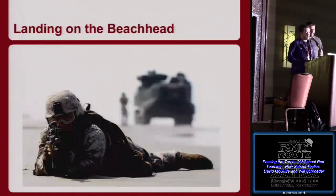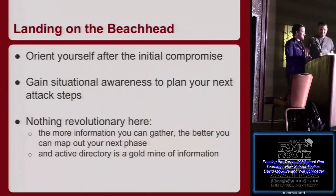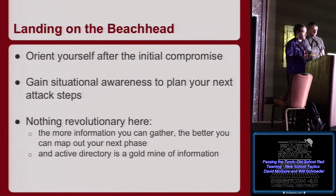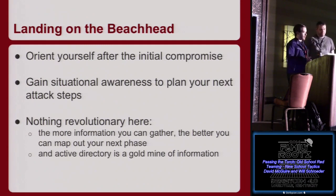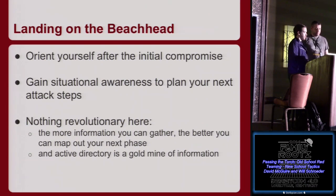The first tactic is situational awareness. After you land on your beachhead with one agent that's gone over the network boundary, you want to orient yourself and get as much information as possible to facilitate additional compromise and lateral movement. The more information you can gather, the more successful you'll be — host information, domain information, network architecture. One thing people are doing more is abusing Active Directory, which is a goldmine of information. There's a huge amount of stuff beyond just net.exe commands.